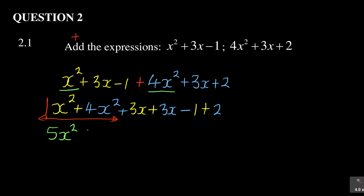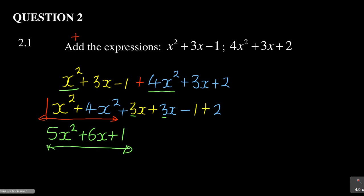5 is the coefficient of x². Then we add 3 and 3, and 3 + 3 = 6, so we maintain the unknown x giving a coefficient of 6x. The next one is −1 + 2, which is +1. So the final answer is 5x² + 6x + 1. That is all they wanted you to demonstrate — that you know how to add algebra — and with that they gave you three marks, which was just a given.